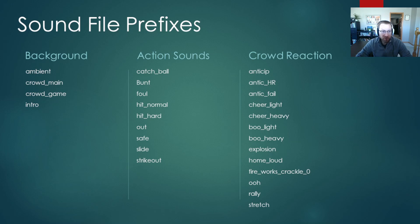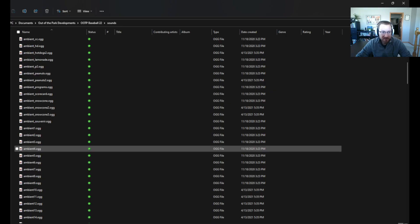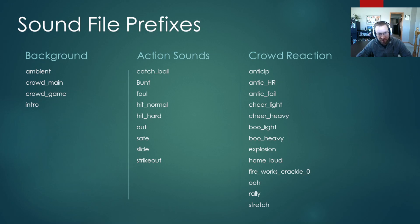You'll notice there's a science here to some of the name prefixes. The prefix of the file dictates when the sound can play. So this is a list of the options. You'll see there's some background ones that are just more like your ambient noises. There's the actual action sounds, like the ball hitting the bat, bunts, safe calls, strikeout calls. And then there's more like crowd reacting to different things happening in the game — cheers, boos, home run calls, things of that nature.